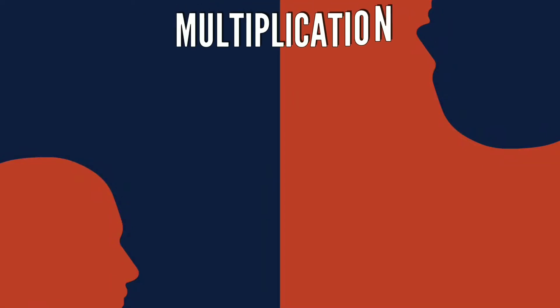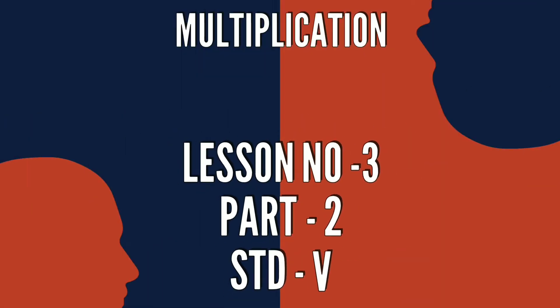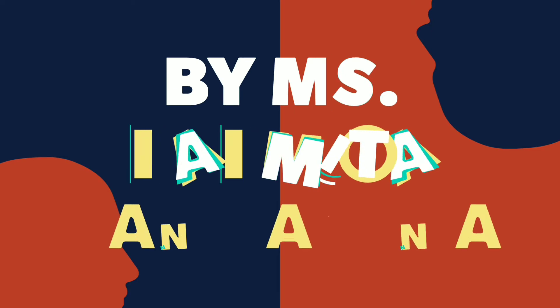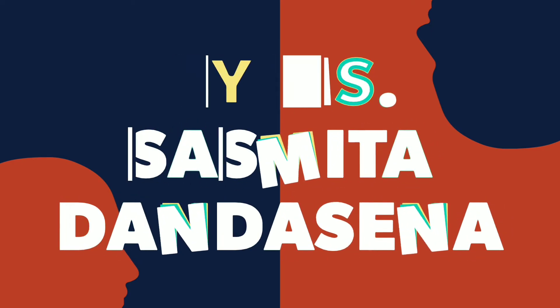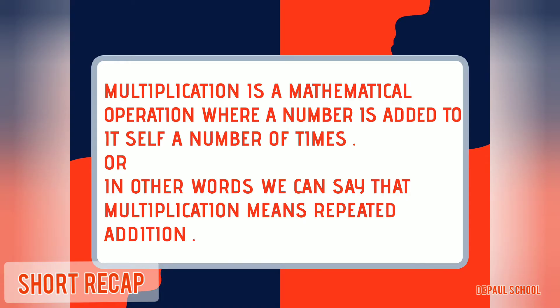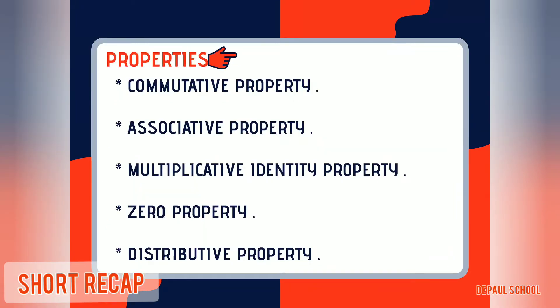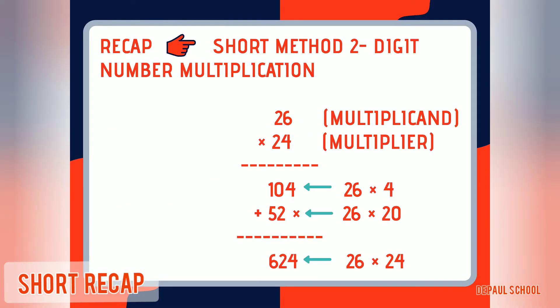Hello children, welcome back to the Part 2 video of Lesson 3, Class 5 Maths, Multiplication chapter. Let's do a brief recap of what we learnt in Part 1. We covered what multiplication is, terms related to multiplication, properties of multiplication, and 2-digit multiplication. I had given a home assignment based on 2-digit multiplication — hope you all have solved it.